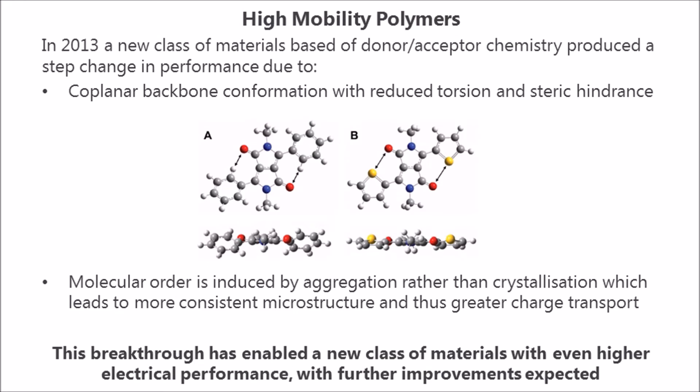The manufacturing benefits for OTFT are only of interest if they have the performance to meet today's commercial demands. Recently, a new class of materials have been developed that have higher performance. These are based on donor-acceptor chemistry, which are placed in a coplanar backbone conformation. In this case, the molecular order is induced by aggregation as opposed to crystallization. This leads to a more consistent microstructure and also greater charge transport. This new material combines high electrical performance with high processability and allows OTFT to meet today's commercial demands.